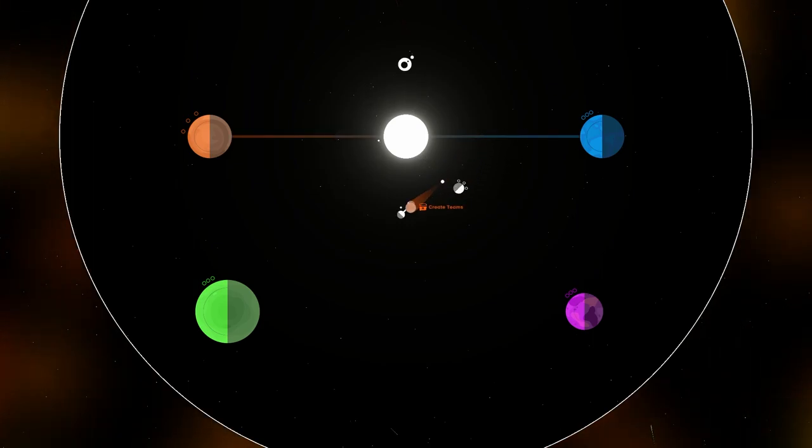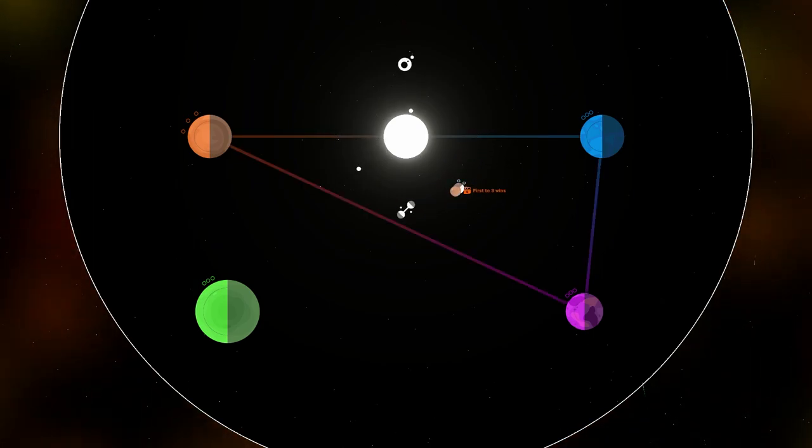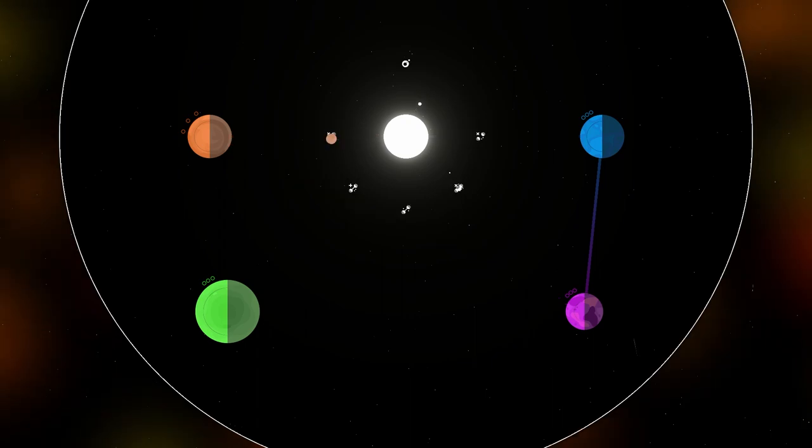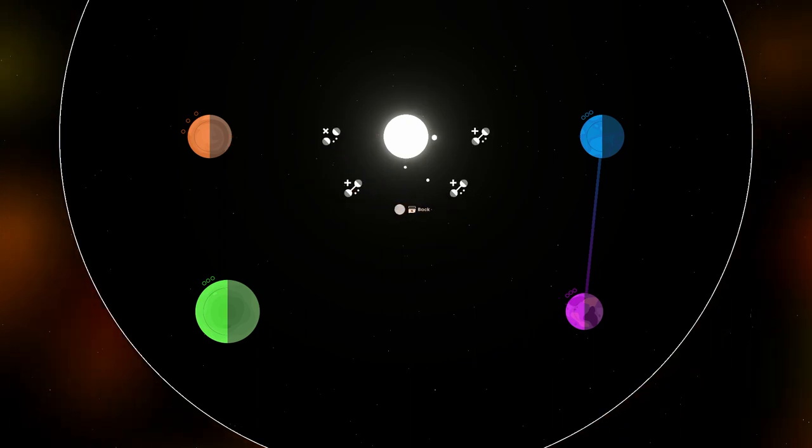I added the ability to assign teams from the sun menu. You can select players that you want to add or remove from your team by their direction from the sun. Teams are represented by connective lines.